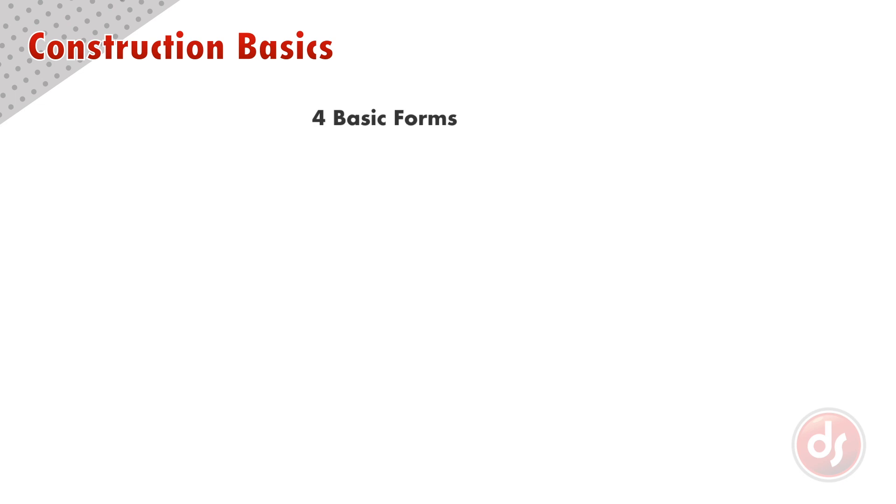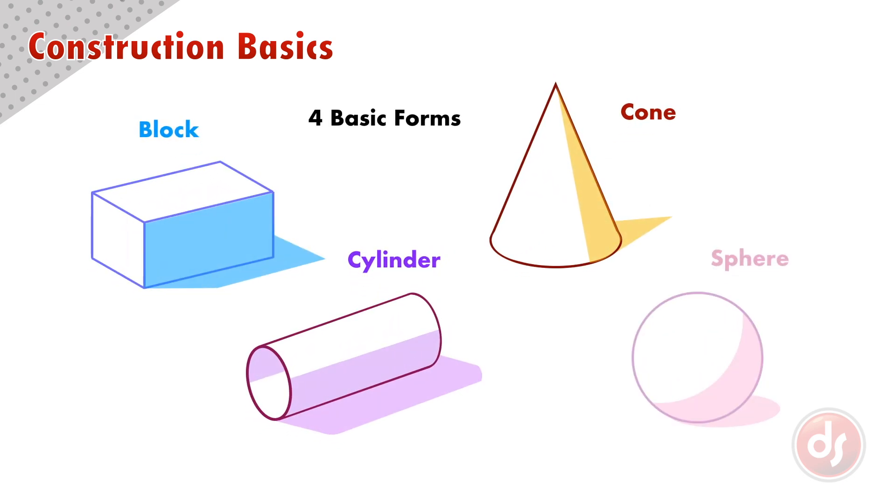Construction drawing starts with the four basic forms: the block, the cylinder, the cone, and the sphere. These will be the literal building blocks of our drawings.